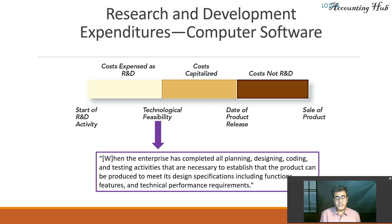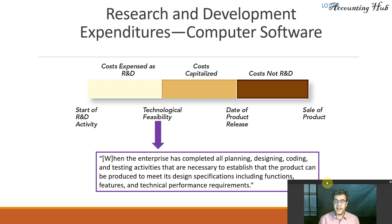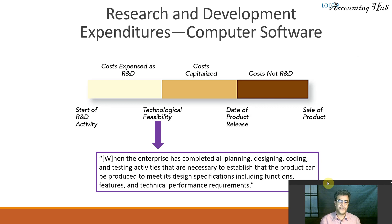Technological feasibility is reached when the enterprise has completed all planning, designing, coding, and testing activities that are necessary to establish that the product can be produced to meet its design specification, including functions, features, and technical performance requirements.